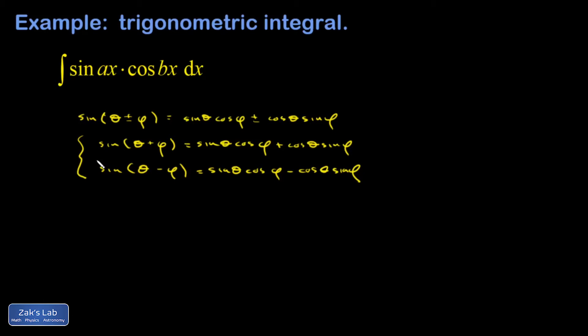And then the trick here is to add these two. And when I add them, these terms are going to cancel out. It's going to leave me with two times sine theta cosine phi, which is the kind of thing that I'm trying to simplify here. So I end up with sine theta plus phi plus sine theta minus phi is equal to two times this expression, sine theta cosine phi.